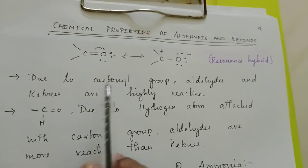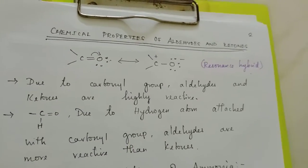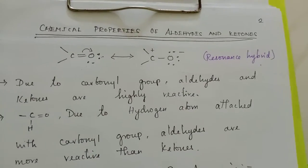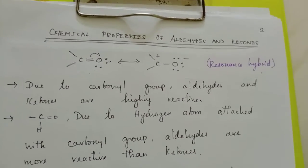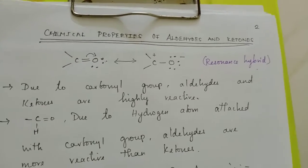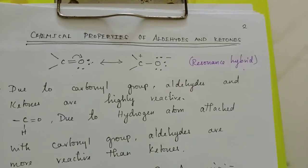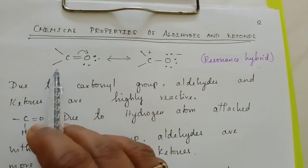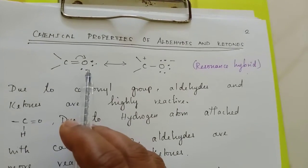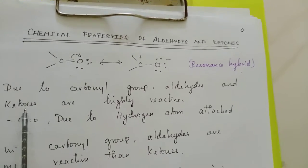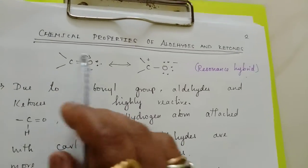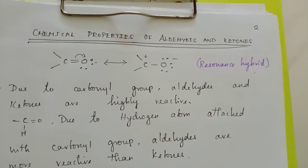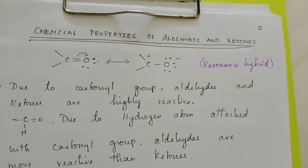Over here, due to the carbonyl compounds present in aldehydes and ketones, these are highly reactive because the carbon atom of the carbonyl group is electron deficient, whereas the oxygen atom is electron rich. So due to this C double bond O in aldehyde, both aldehyde and ketone are highly reactive.